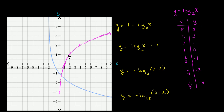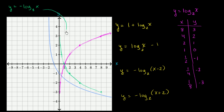How does the graph shown differ from y equals log base 2 of x? The obvious thing that jumps out is that it's flipped over the x-axis, which is a good sign we're looking at y equals negative log base 2 of x. Each of those points gets flipped over the x-axis. So y equals negative log base 2 of x looks something like this — and we're getting close to the blue graph.